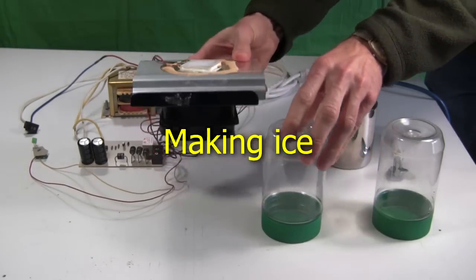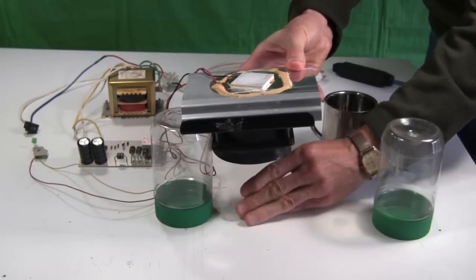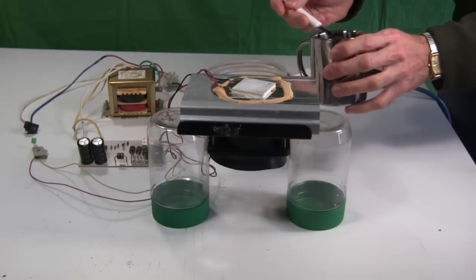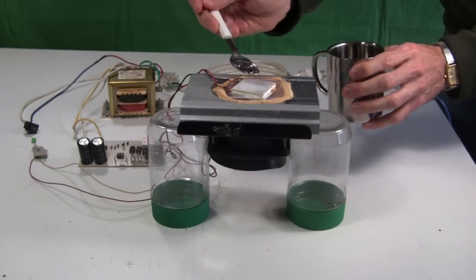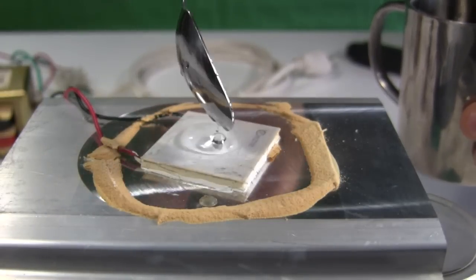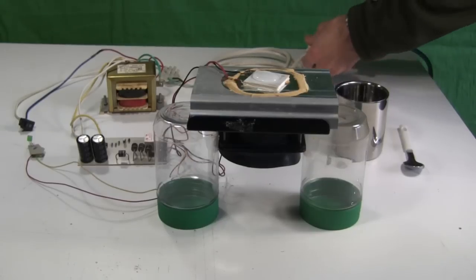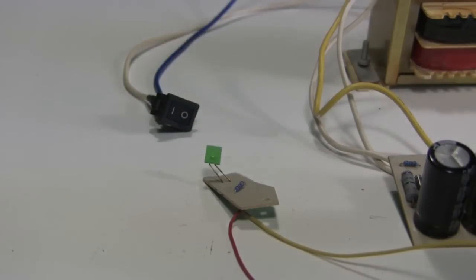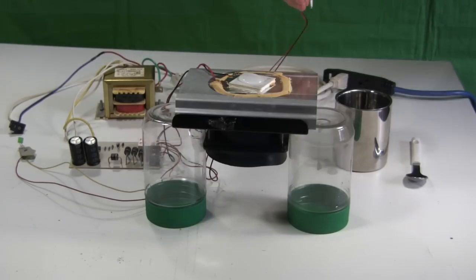Time to make some ice. I put the Peltier module, heat sink, and fan up on these jars to allow air to flow away from the fan. I then put some water on the cooling side of the Peltier module. I plug it all in and turn on the switch. Notice that the LED lights up. The Peltier module must be doing its thing.